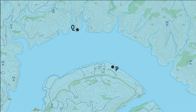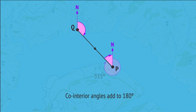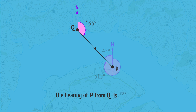Now, if we're located at Q and want the bearing needed to return to P — that is, the bearing of P from Q — then we again use angle relationships to work this out from the original bearing. These angles are co-interior, and so they add to 180 degrees. If we subtract the original bearing from 360 degrees, we get this 45-degree angle, and that makes this angle equal to 180 minus 45, or 135 degrees. Therefore, the bearing of P from Q is 135 degrees.